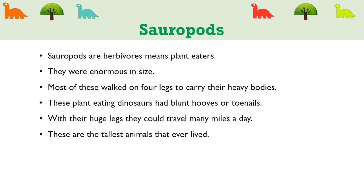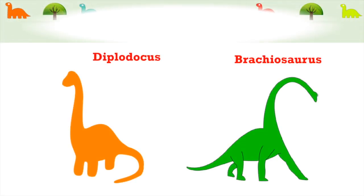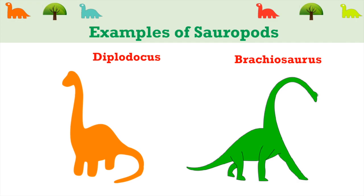The next subgroup is sauropods. Sauropods are herbivorous, meaning plant eaters. They were enormous in size, and most walked on four legs to carry their heavy bodies. These plant-eating dinosaurs had blunt hooves or toenails. With their huge legs they could travel many miles a day. These are the tallest animals that ever lived. Diplodocus and Brachiosaurus are two examples of sauropods.